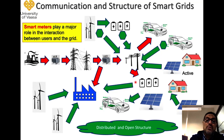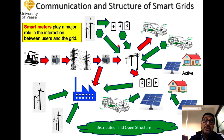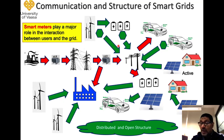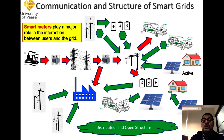Now the structure is very complex, because we have different directions of power flowing — from generation to consumers, from consumers to the grid. Such a network is very complex to control and maintain, because it is very important to keep the stability of the network in operation. This network will have many features like self-healing and higher reliability. Communication is very important here — between consumers, between individual loads and the grid — some kind of communication is essential.